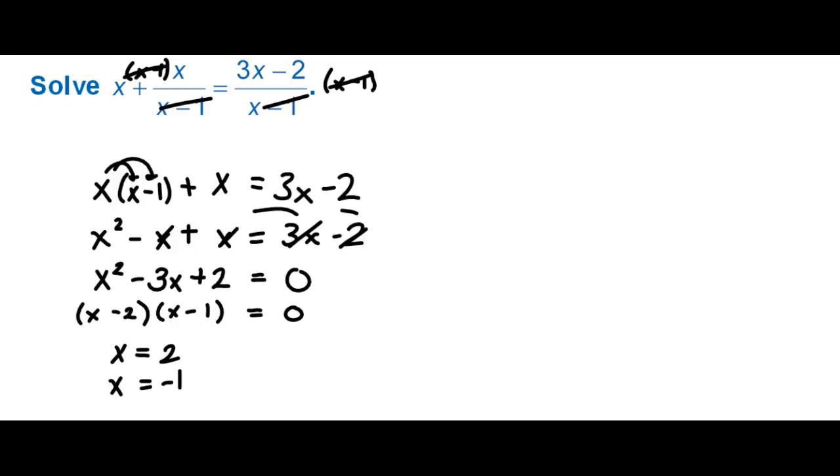Now if I just left it there I could assume that both answers worked but let's check them into our original equation here. So we have 2 plus 2 over 2 minus 1 equals 3 times 2 minus 2 over 2 minus 1 so we have 2 plus 2 over 1 equals 6 minus 2 over 1, 2 plus 2 is 4, 6 minus 2 is 4, so it looks like 2 checks out.